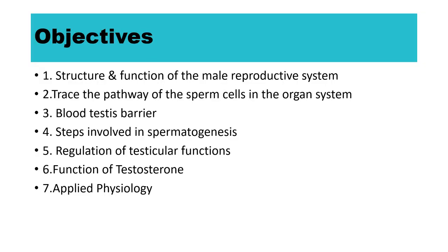By the end of this section, you will be able to describe the structure and function of the male reproductive system, trace the pathway of sperm cells in the organ system, blood-testis barrier, steps involved in spermatogenesis, regulation of testicular functions, and function of male sex hormone, i.e., testosterone, and its applied physiology.